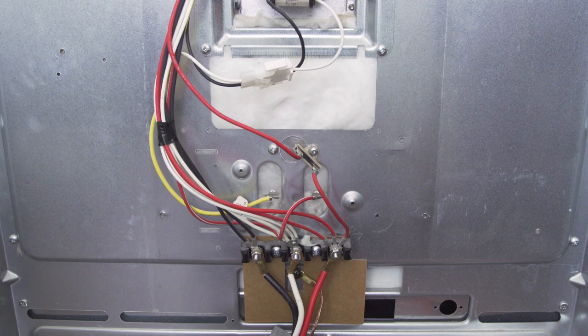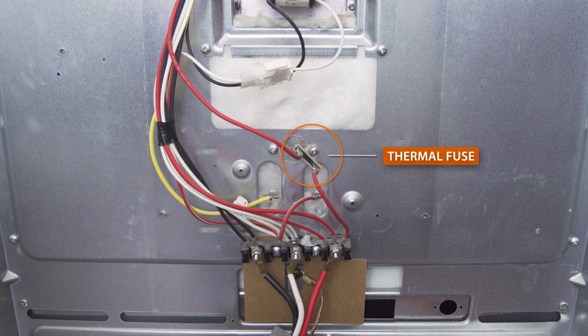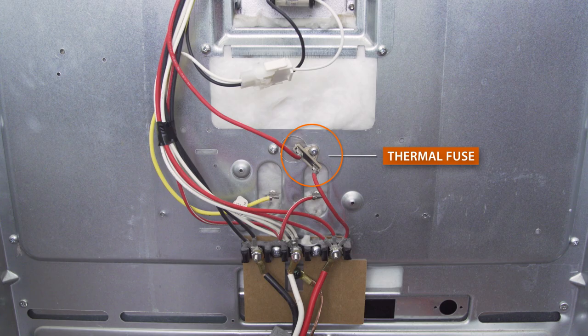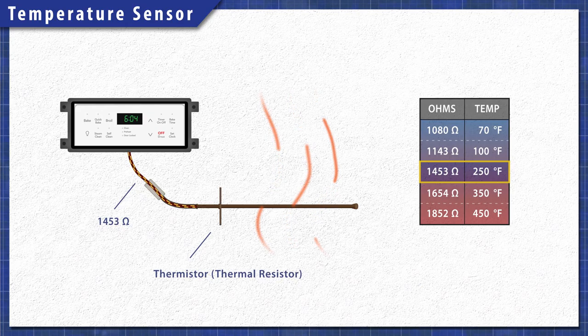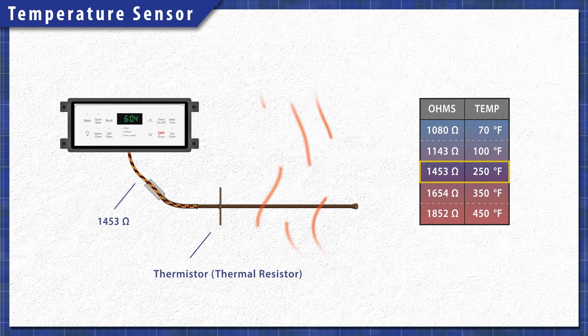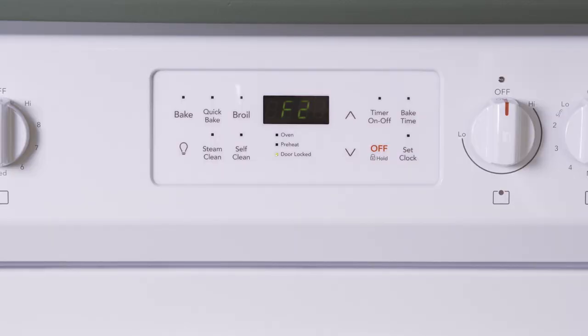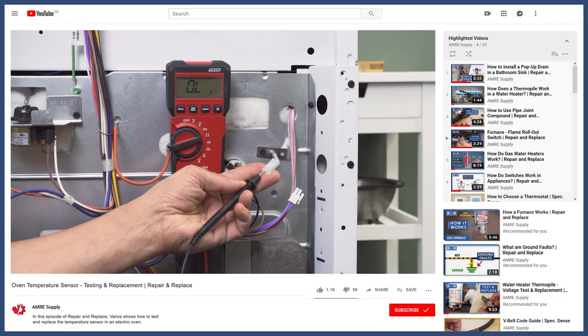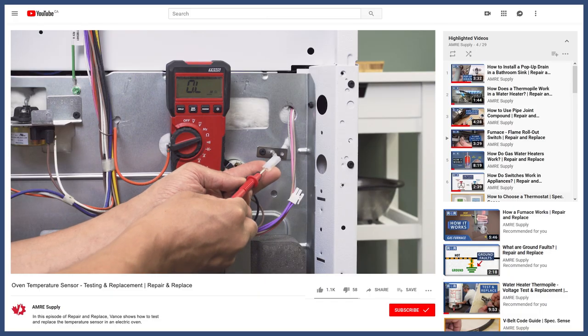Other models will use a thermal fuse which is not resettable. The testing and replacement is very similar to that of the limit switch. In ovens that don't have a fuse or limit switch, the control board monitors the temperature sensor. If the oven overheats, the control board will cut power to the elements and will display an error code. You can learn more in the videos linked below.